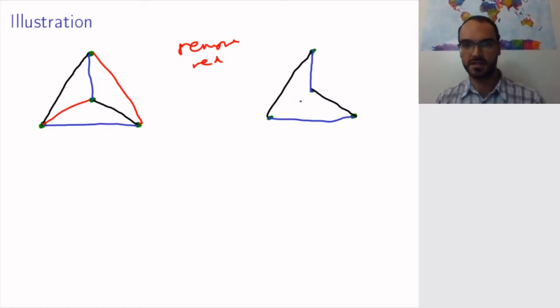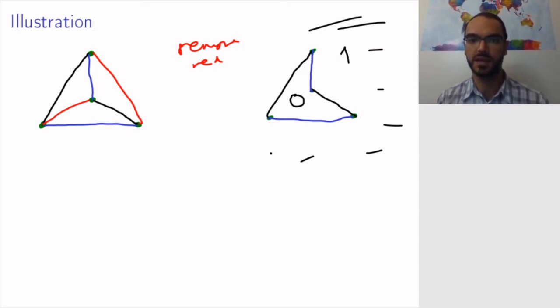It will have the infinite face and it will have this face. And in this case, I can color the faces of this graph in two different colors. So, I color this face with the color 0 and this face with the color 1. So, this is the infinite face that I'm coloring with the color 1.